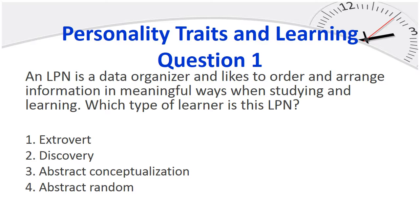Personality traits in learning, question 1: An LPN is a data organizer and likes to order and arrange information in meaningful ways when studying and learning. Which type of learning is this LPN? The answer is abstract random — they use their feelings to organize information into meaningful ways to grasp new information.